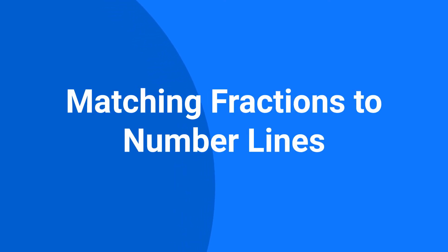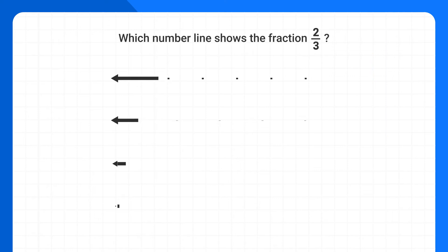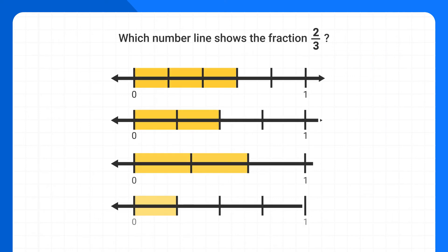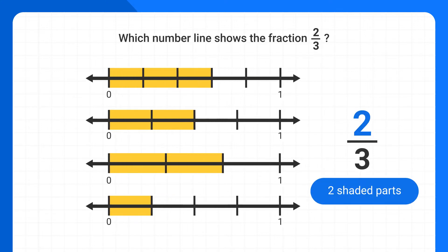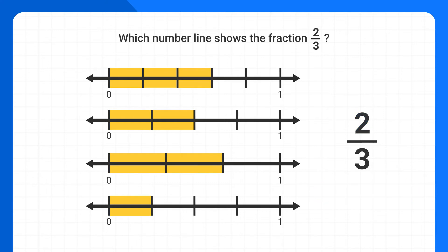Today we're learning how to match fractions to a number line. Let's identify which of these number lines is showing the fraction 2 thirds. The numerator of 2 indicates there should be two shaded parts or sections of the number line. Let's find the number lines that only have two shaded parts.